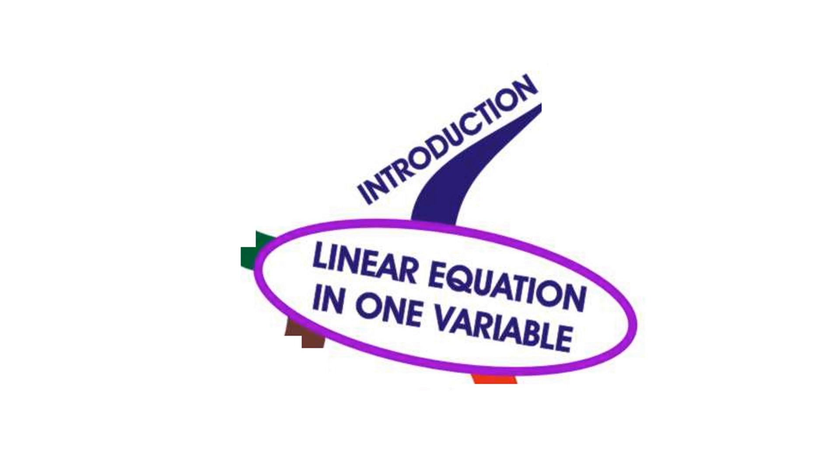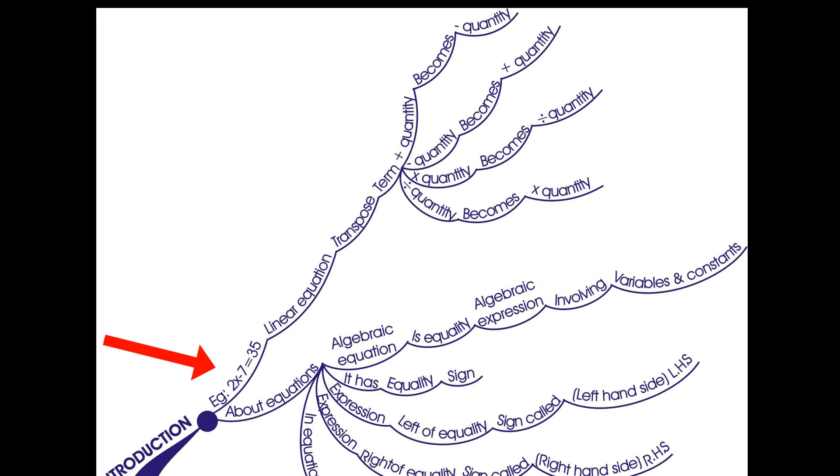Let us see our first branch. It is about introduction. For example, 2x minus 7 equals 35 is a linear equation.